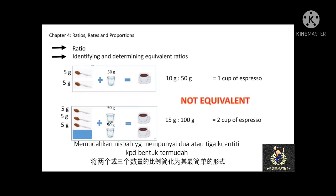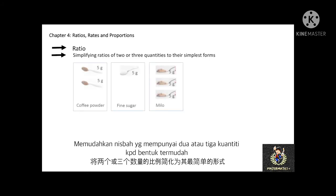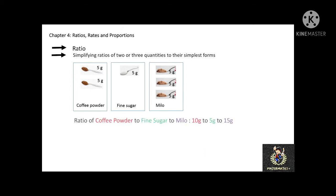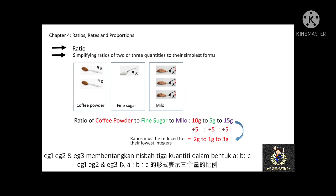Next, we learn how to simplify ratios of two or three quantities to their simplest form. The method is similar to simplifying fractions. Referring back to the mocha recipe, the ratio of 10 grams to 5 grams to 15 grams is simplified to 2 to 1 to 3 by dividing each quantity by 5. The rule is that the simplified ratio must be reduced to their lowest integers — not fractions, not decimal numbers.